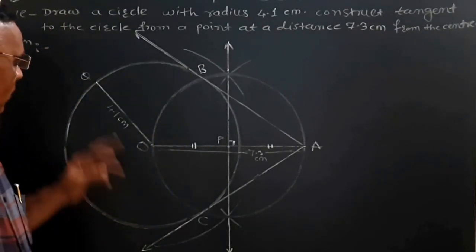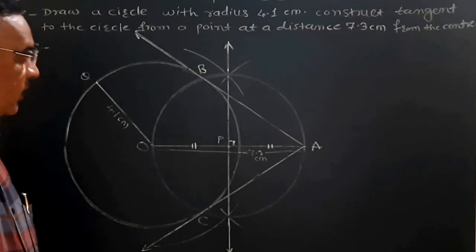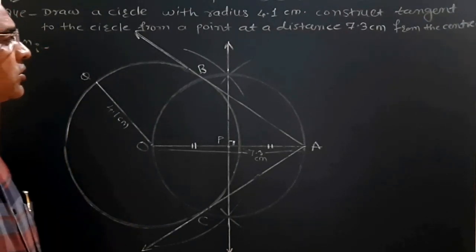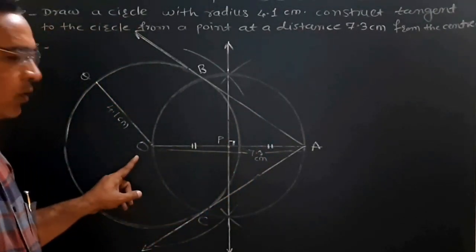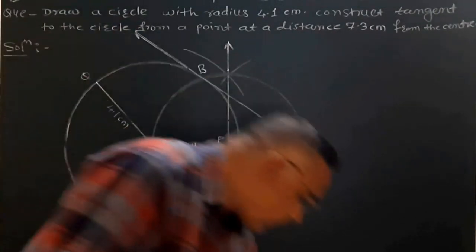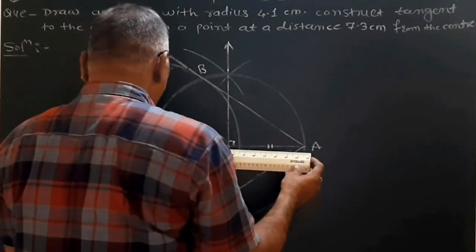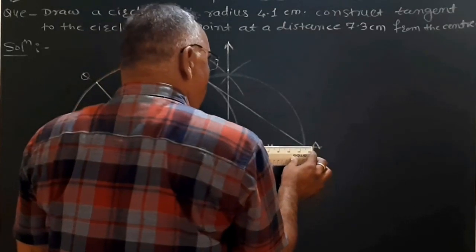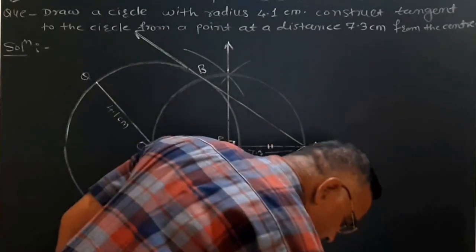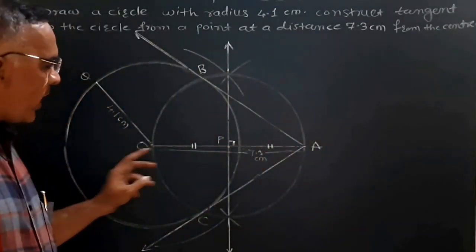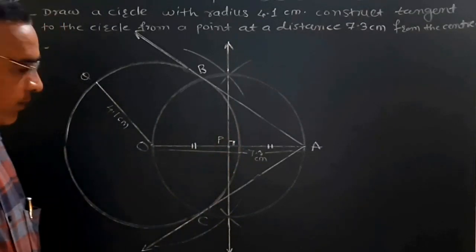OQ is the radius of the circle, 4.1 cm. Now take a distance of 7.3 cm from the center O. By scale, draw a segment OA as 7.3 cm. OA is a distance of 7.3 cm.